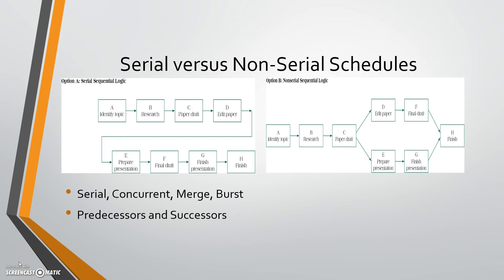Just the opposite is a burst activity. Also on the right you can see C, the paper draft, and that's bursting into both D and E, which can be done at the same time or in parallel. Think of it this way — merge is you're bringing together, burst you're exploding out. And then there are predecessors and successors.